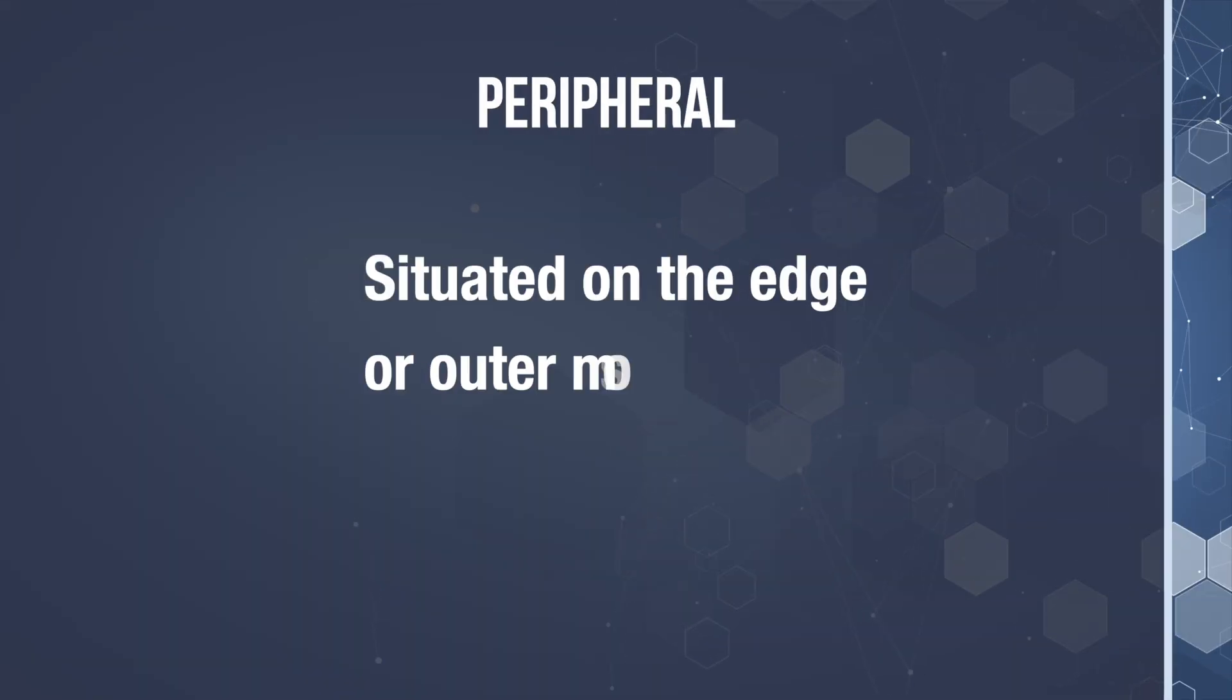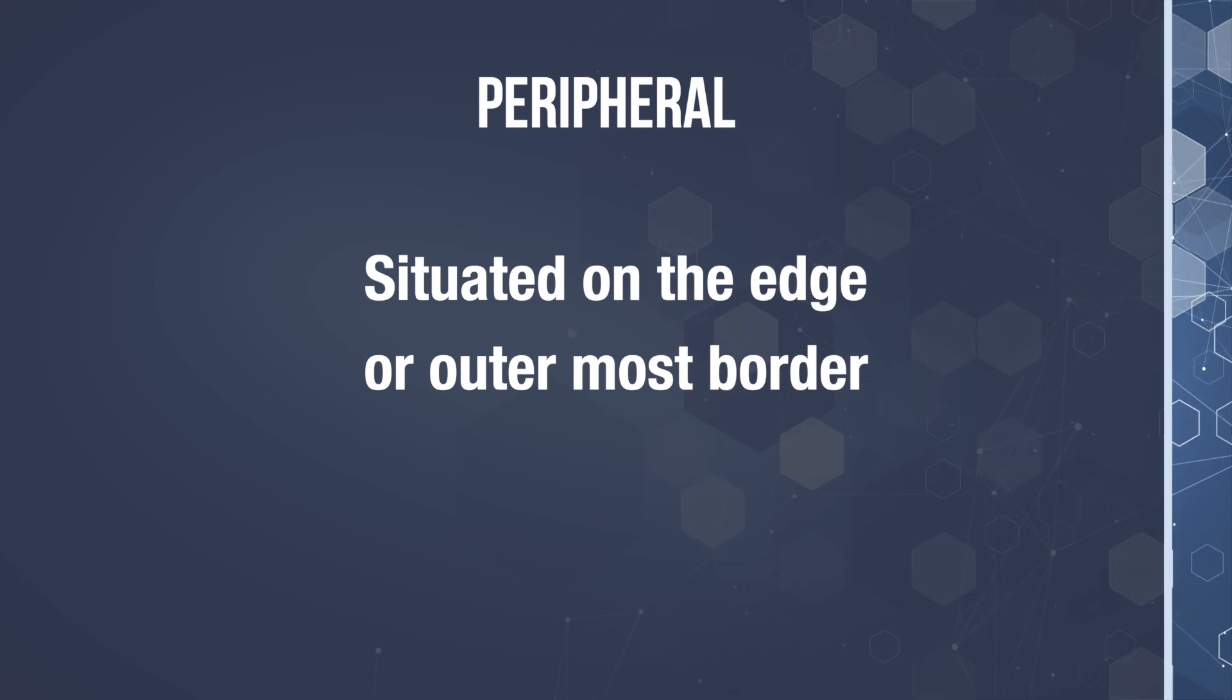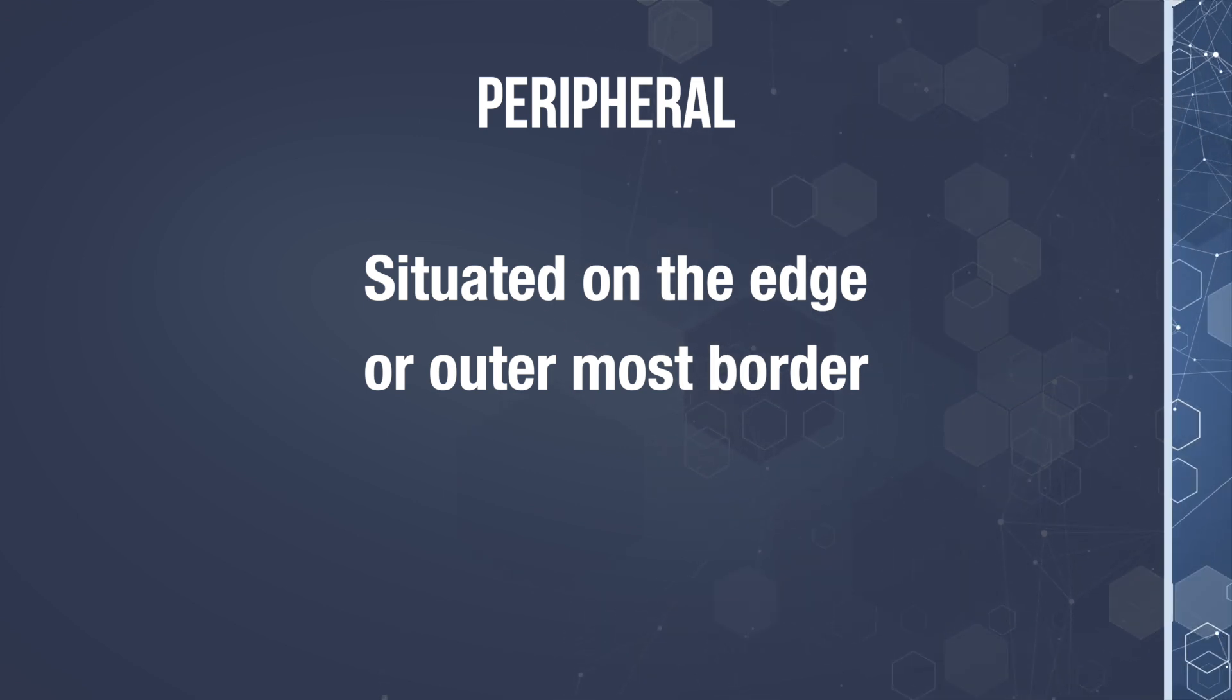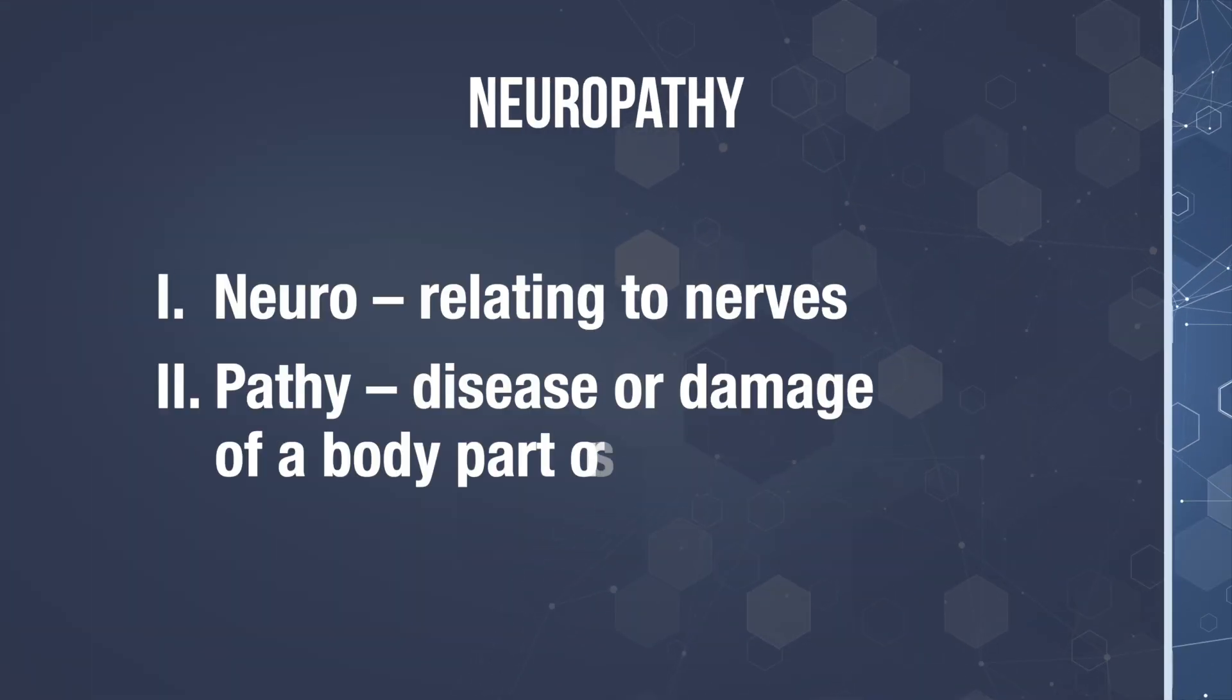Here's what we do know. The word peripheral neuropathy is sure as heck hard to pronounce, but let's look at the breakdown of this word. The word peripheral means situated on the edge or the outermost border. In this case, it relates to being outside of the brain and spinal cord.